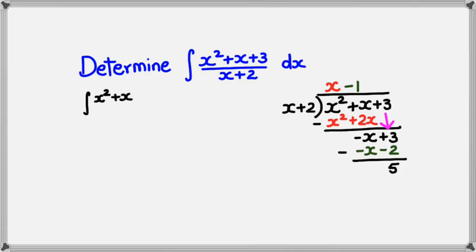So now what I could do is I could rewrite this function as a quotient plus remainder. So the quotient is going to be x minus 1 plus 5 divided by the divisor which is x plus 2, and of course it's dx.